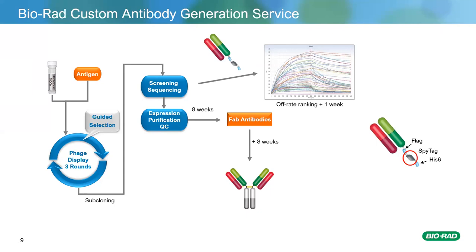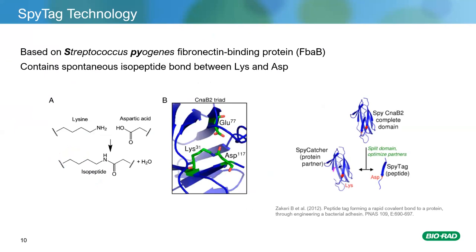Historically, we faced a conundrum when customers wanted maximum binding: we'd recommend the monovalent format to identify highest-affinity clones, give those to the customer, and then use subcloning to convert them into a bivalent format — expensive and time-consuming. Now we generate all antibodies in the monovalent format, do all the affinity work, identify the highest-affinity binders, then rapidly convert formats at the protein level into a high-avidity bivalent format, giving customers maximum binding strength from the antibodies we've discovered.